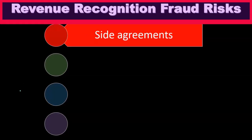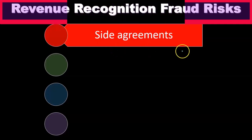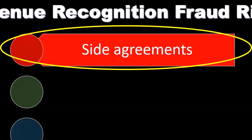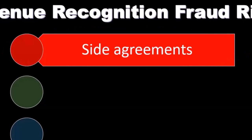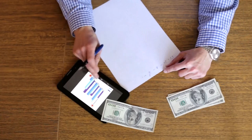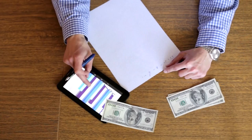Revenue recognition fraud risks: as we go through this, we want to consider the fraud risks. One type of fraud risk is side agreements — arrangements that are used to alter the terms and conditions of recorded sales. This is not a good thing because it could be deceptive, which is where the fraud comes into place. These are arrangements used to alter the terms and conditions of recorded sales in order to entice customers to accept delivery of goods and services.